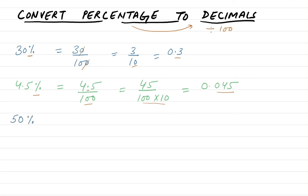Now let's do 50 percent: 50 divided by 100. The zero cancels, leaving 5 divided by 10, which is 0.5. Because there is only one zero (i.e., dividing by 10), we have a single place after the decimal.